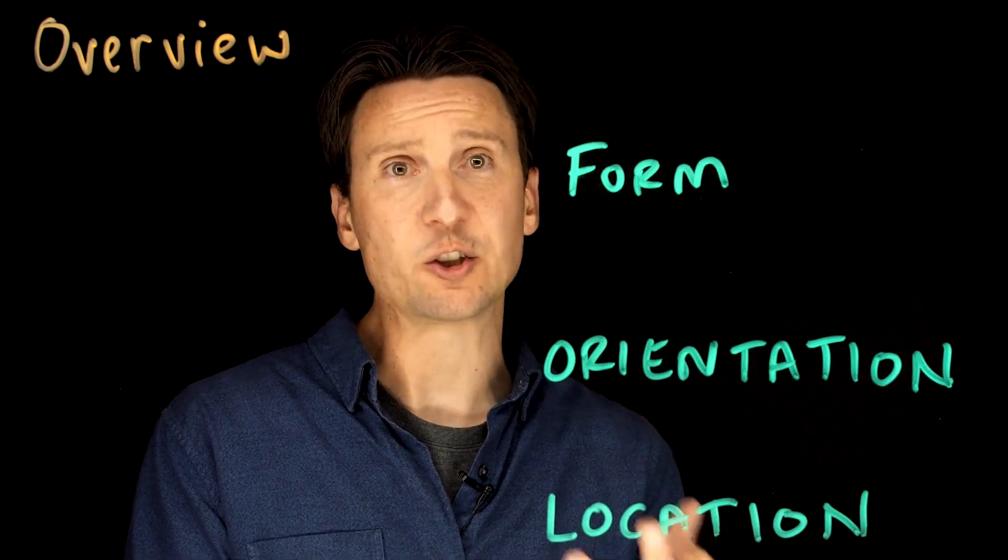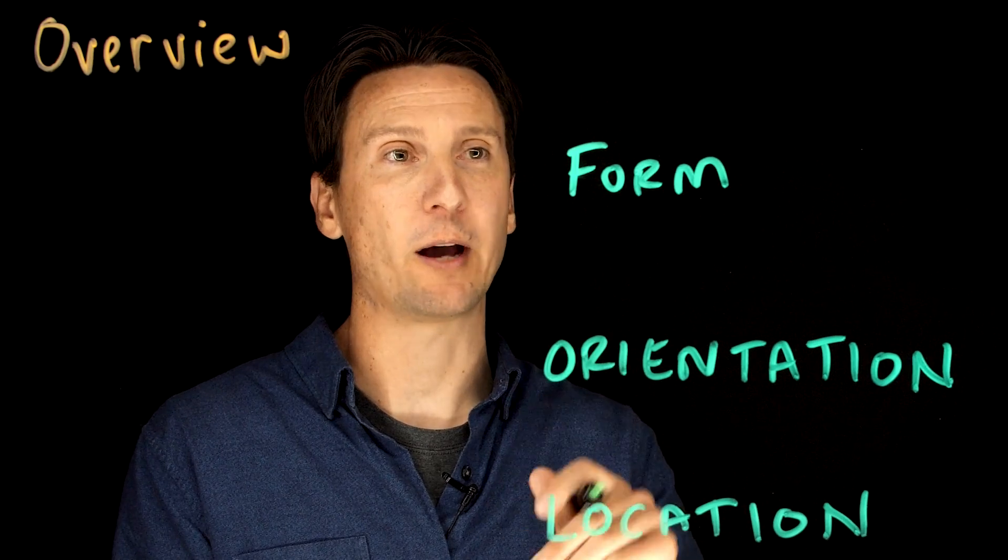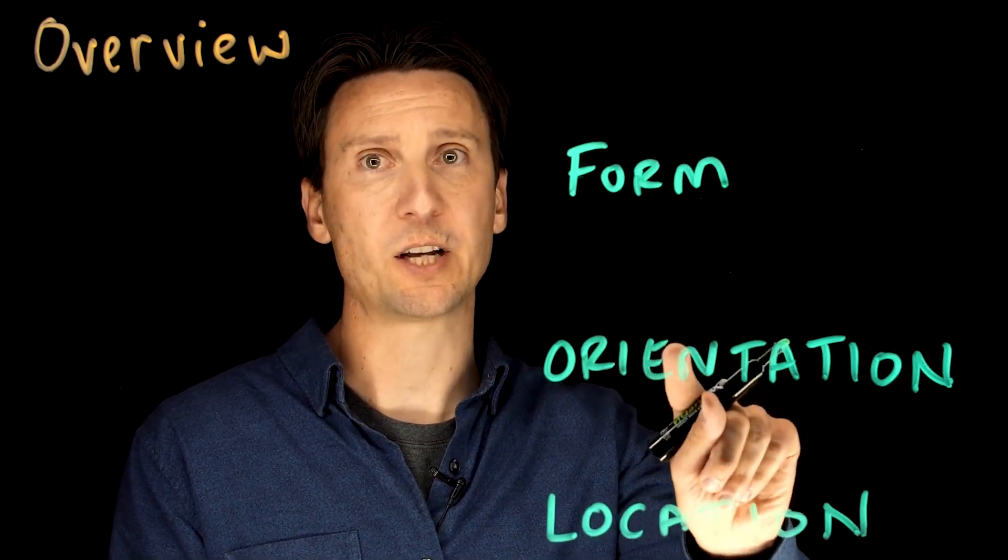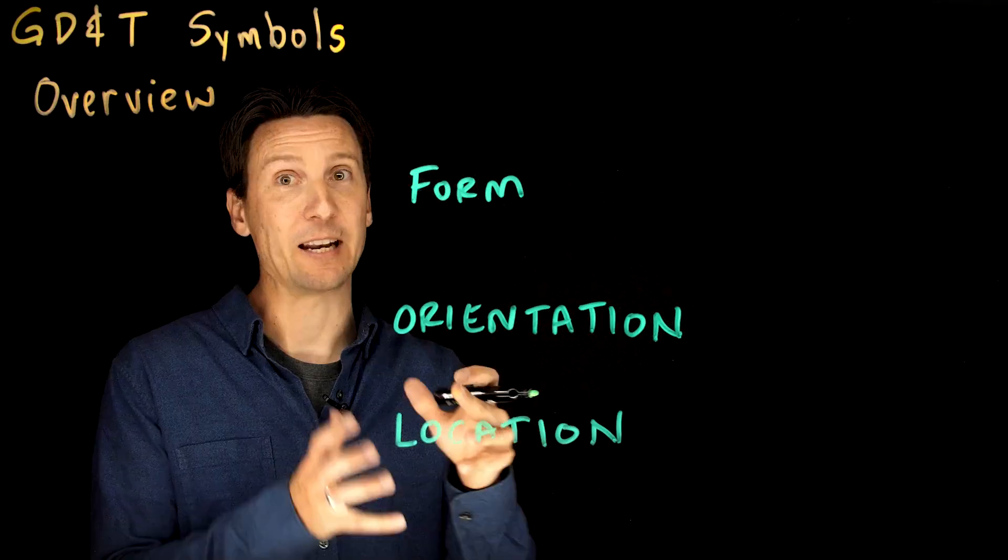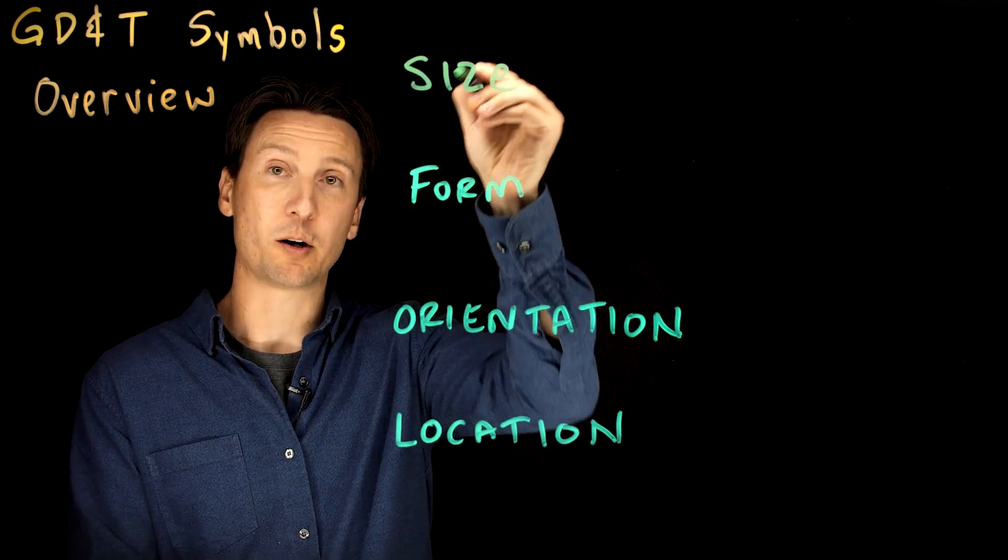Geometric tolerancing is a feature-based tolerancing system and we say that all features can vary in three ways: form, orientation, and location. And if you have a feature of size, then it can vary in one more, which is size.